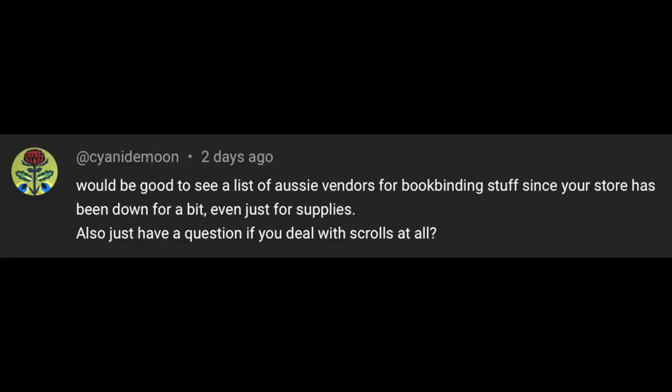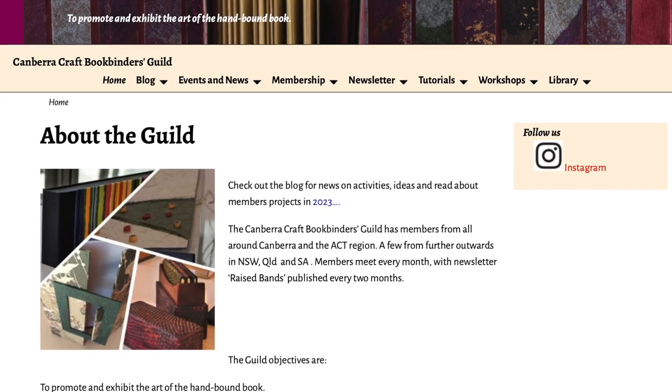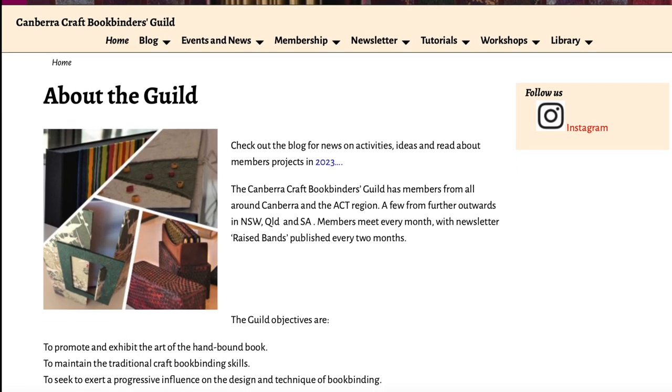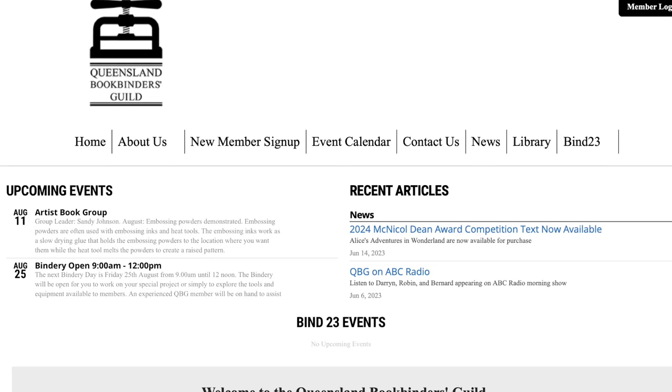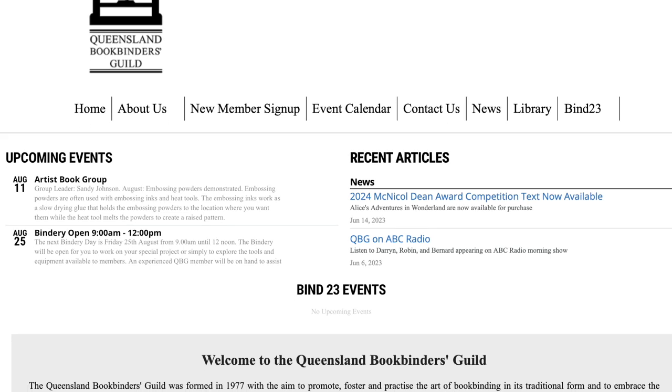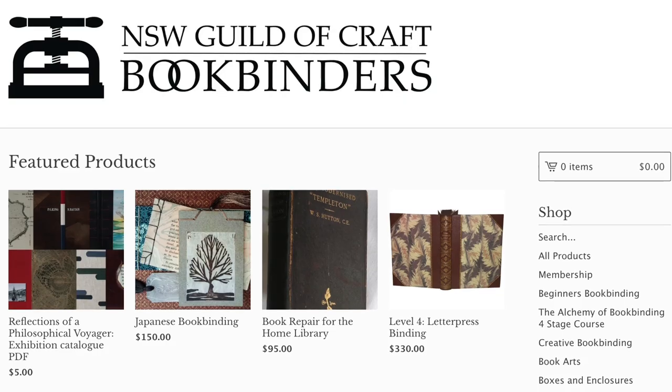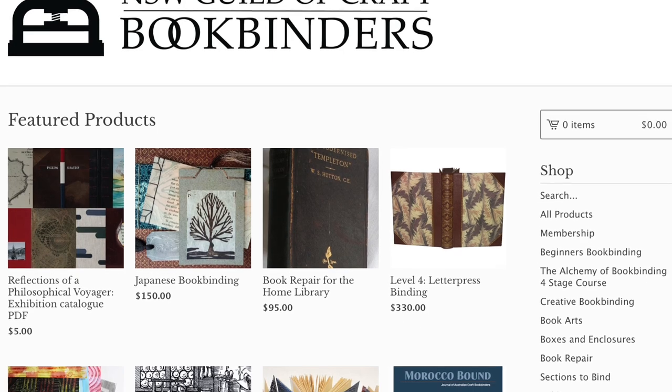And the final question is about bookbinding supplies in Australia. In Australian politics, this might be called a Dorothy Dix. The state-based bookbinding guilds sell some materials to members, and it's worth joining just for this reason. They often have equipment for sale from past members, and it's probably the easiest way to get things like a nipping press.